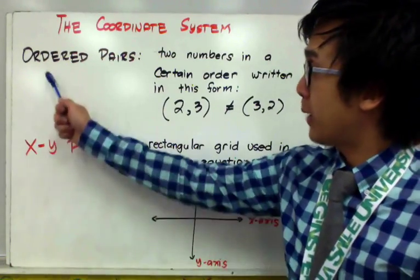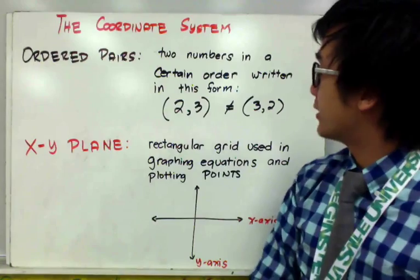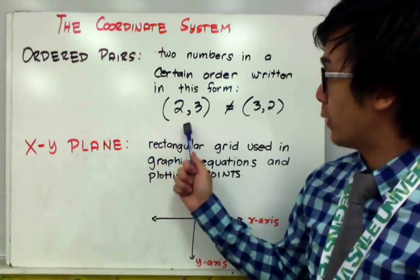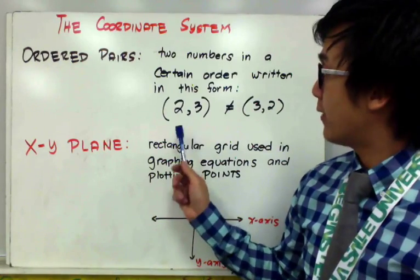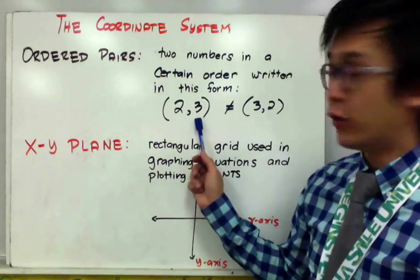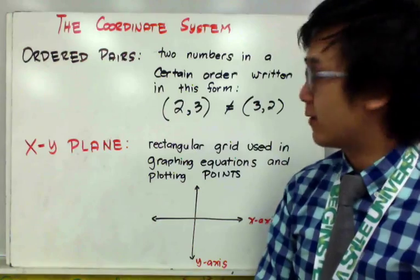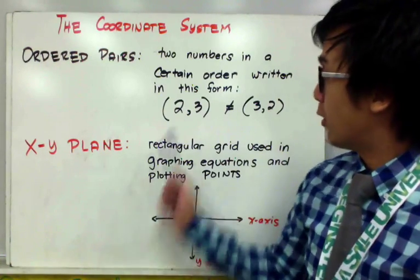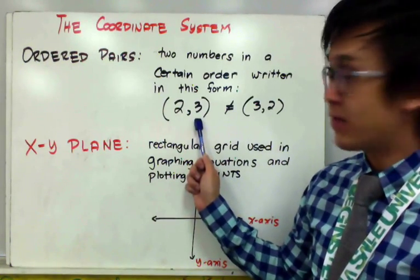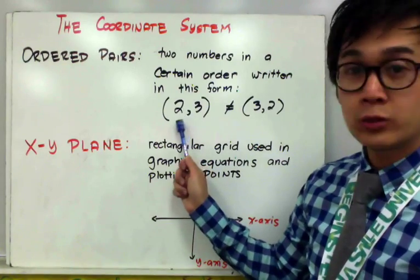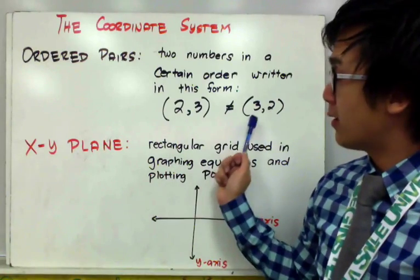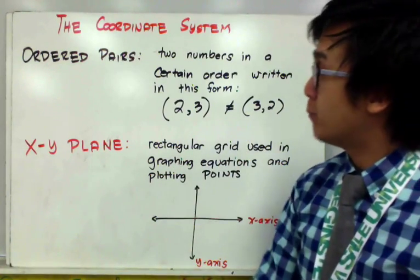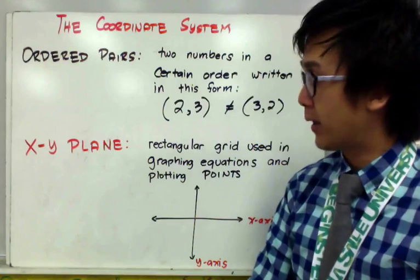Ordered pairs are two numbers in a certain order written in this particular form. We are representing a point given the x-coordinate and the y-coordinate. You need to understand that the ordering of the numbers inside the parentheses is very important because (2,3) is not the same as (3,2). So this is the ordered pair that we are going to use today in plotting our points in the x-y plane.